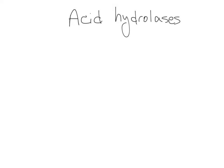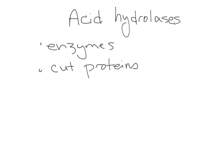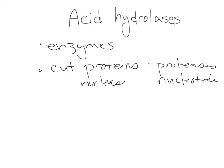Acid hydrolases are enzymes. Most of them are able to cut particular molecules. They could be cutting proteins — if they cut proteins, they're called proteases. If they cut nucleotides, they're called nucleases. If they cut sugars, they're called glycosylases. And there are many, many of these acid hydrolases.